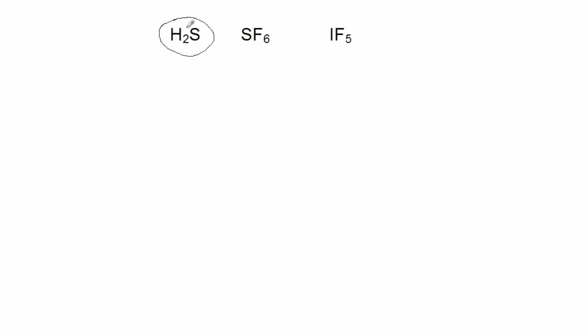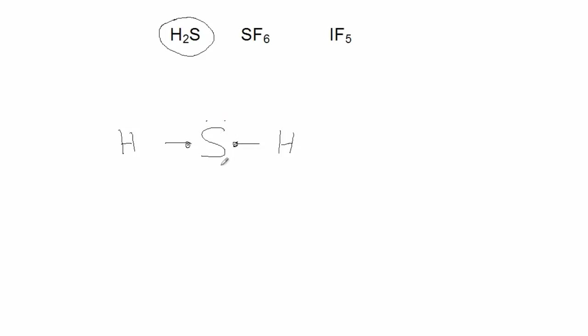Now we'll do two structures with sulfur. First, H₂S, which is analogous to H₂O. Sulfur is the central atom, and because it's in Group 6, it behaves in this molecule exactly like oxygen — it will not disobey the octet rule, has its two lone pairs, brings these two electrons to the sharing party, and shares them with the two hydrogens.